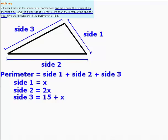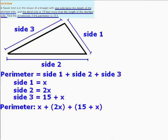Now that we've defined all three sides of the triangle, we can rewrite the perimeter equation using these variables. So the perimeter can now be rewritten as X plus 2X plus 15 plus X. We are told that the dimensions of the perimeter is 131, therefore the perimeter is equal to 131.